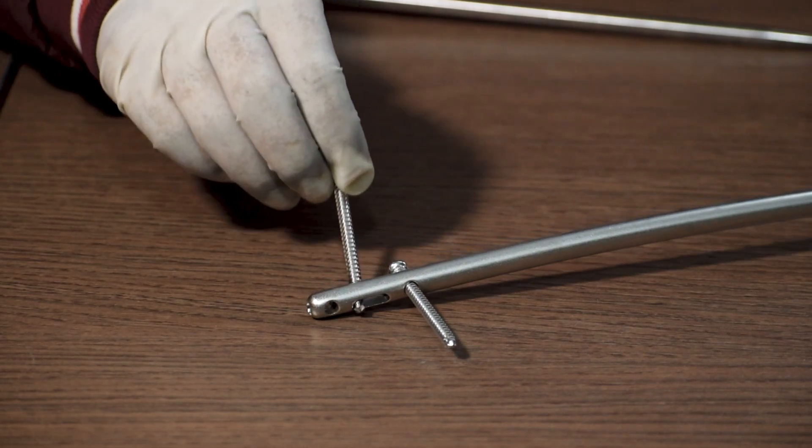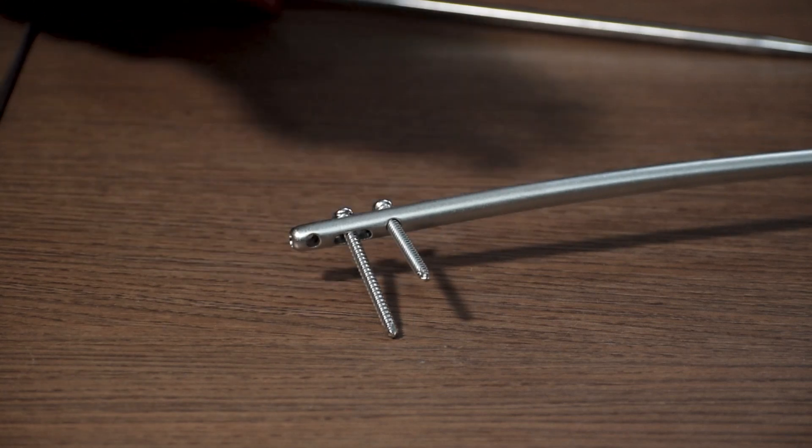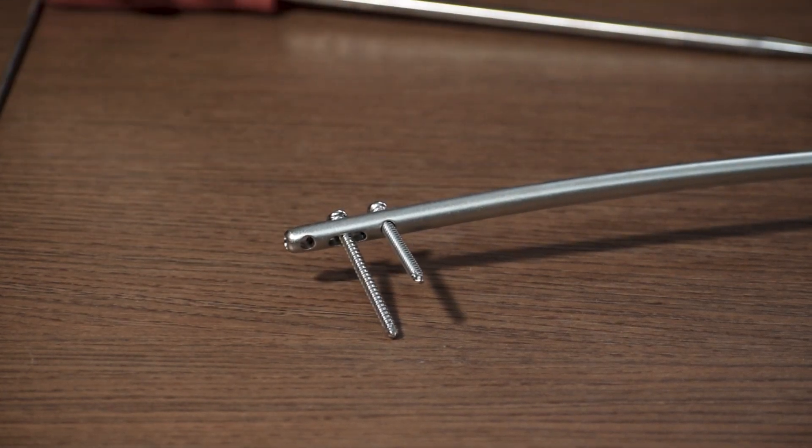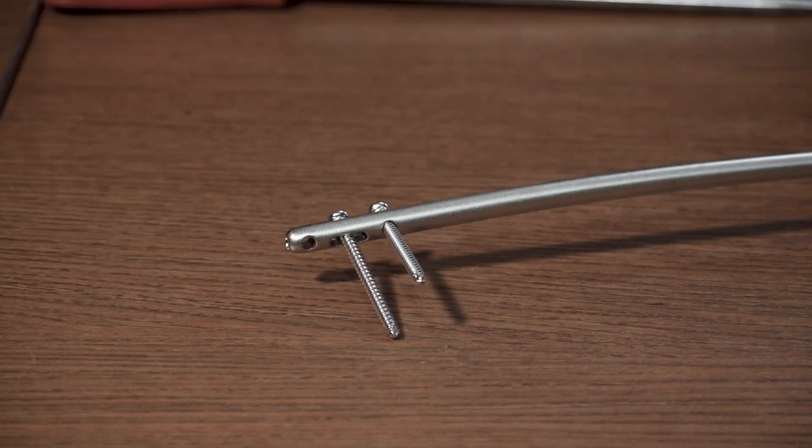The interlocking bolt in the dynamic hole is posterior, and the interlocking bolt in the two static holes are anterior. So this was the distal lock.